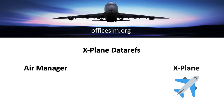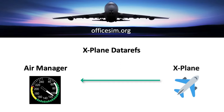So we have a plane here in X-Plane and the plane is accelerating. It's going to send the data ref information for the airspeed to Air Manager, and Air Manager is going to display that airspeed on some sort of gauge. This is known as a one-way or read-only pattern where Air Manager is just going to receive a signal but not send anything back, because it doesn't need to change anything.